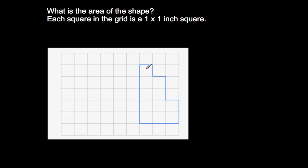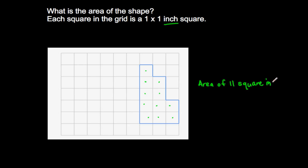Let's begin counting: one square inch, two square inches, three, four, five, six, seven, eight, nine, ten, eleven. Let's just check one more time: one, two, three, four, five, six, seven, eight, nine, ten, eleven. There are eleven unit squares, and the name of each unit square is called a square inch. So this shape has an area of eleven square inches. The abbreviation for inches is IN. with a period.